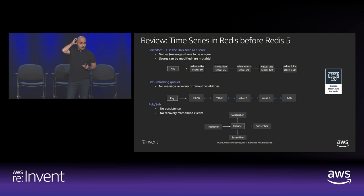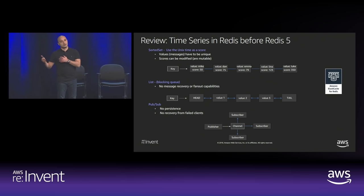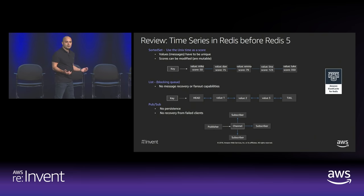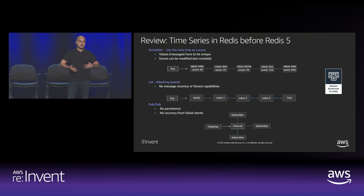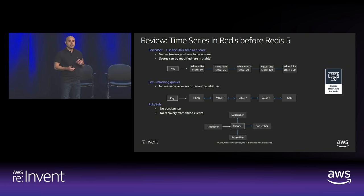Another data structure people use is PubSub. PubSub is not really a data structure, but it's a capability embedded in Redis. PubSub does support fan-out — you define a channel, publish messages to it, and subscribers can subscribe to that channel, fanning out those messages. The problem is the data is not persisted in a data structure, so if a client is not listening to the channel it's going to miss the message. It's not really ideal for critical or message-driven time series data.